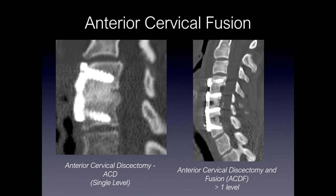Here's an example on the left of a single-level anterior cervical disc fusion, where there has been a discectomy and a fusion across the disc base with an anterior plate and vertebral body screws. And here's an example of a multi-level anterior cervical disc discectomy and fusion, where the discs have been removed, implants have been placed, and a plate is seen spanning multiple levels with vertebral screws.